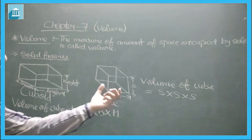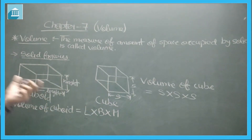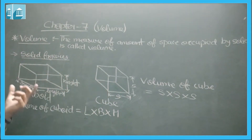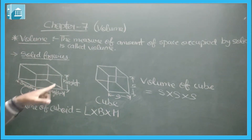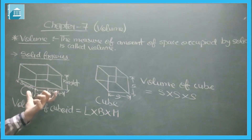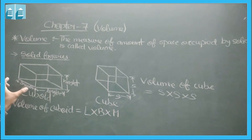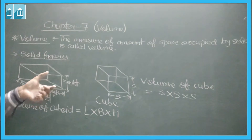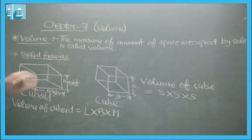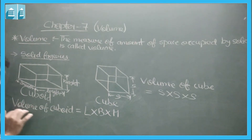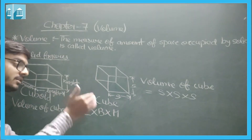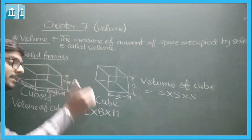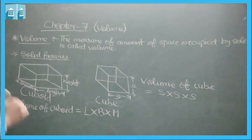We will study only two solid figures: cuboid and cube. A cuboid is like a rectangle — all edges are different. The longest edge is the length, then breadth, and then height. The volume of a cuboid is found by multiplying length, breadth, and height.